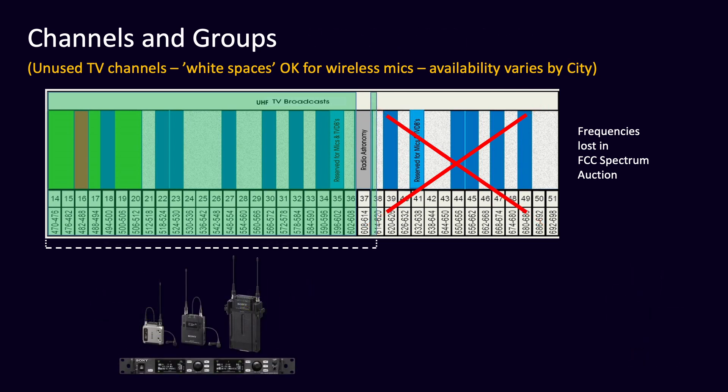In the case of our latest generation DWX digital wireless products, there are no blocks, as they are able to tune anywhere within the allowable FCC-mandated UHF spectrum from UHF TV channel 14 up through TV channel 38. It's also worth noting that channel 37 in the DWX's range is not available for use with wireless mics, as it's reserved for radio astronomy.